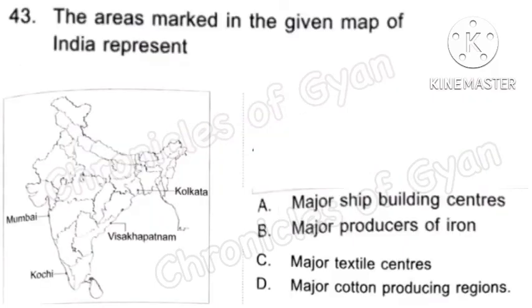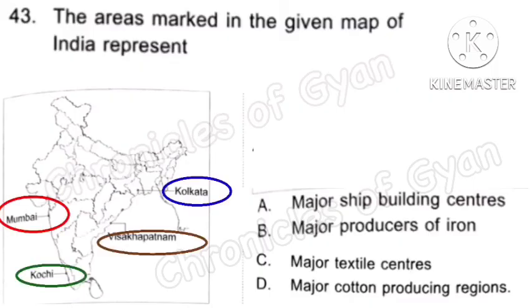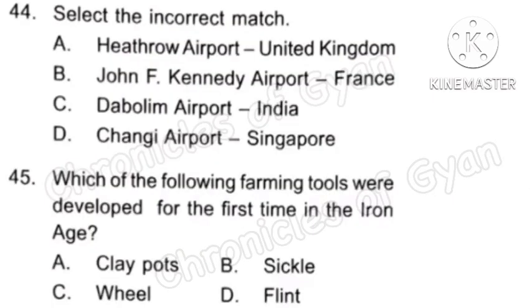Question 43: The areas marked in the given map of India represent — the correct answer is Option A, Major Shipbuilding Centers.